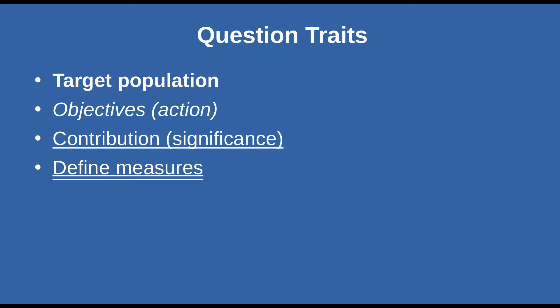This screen is just a review of what's needed when shaping your research questions. You don't always have to put everything inside the question itself, but it must be somewhere within your paper. You always need your target population, your objective, your action, your contribution or significance, and you have to define how you're going to measure something.